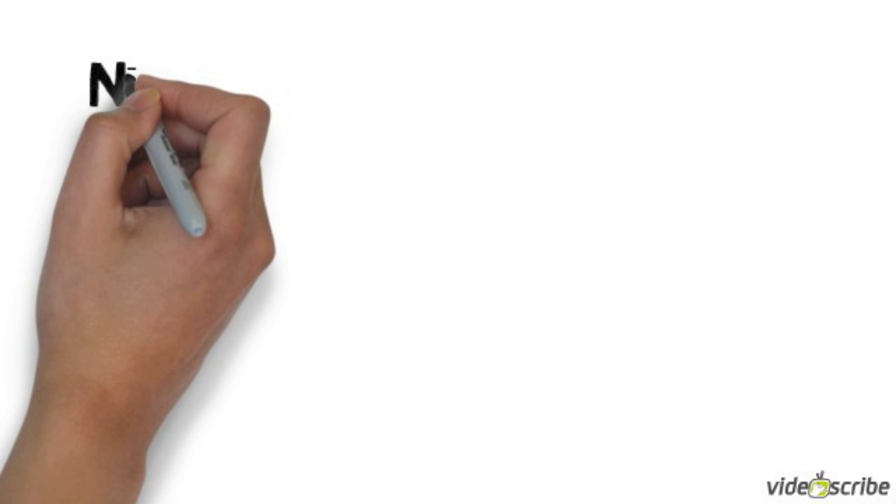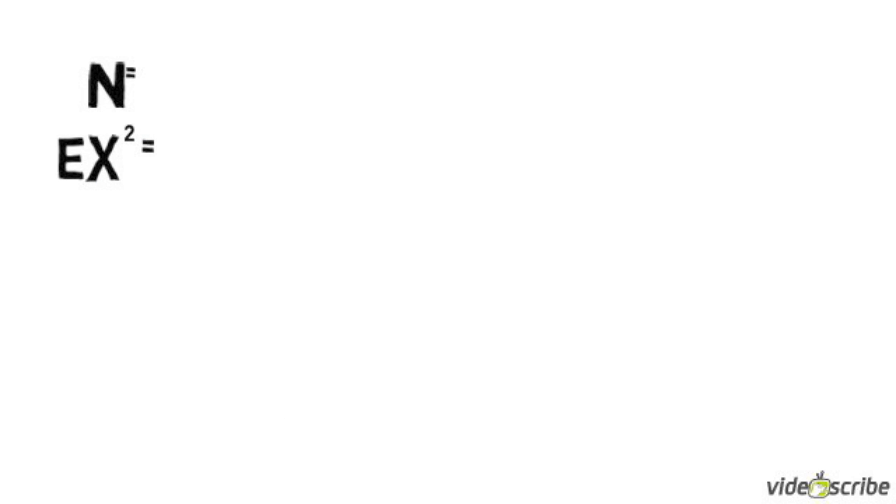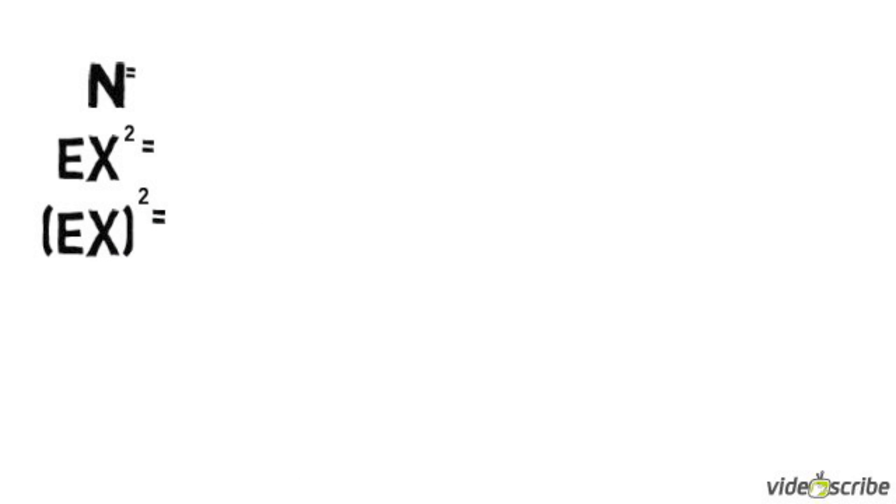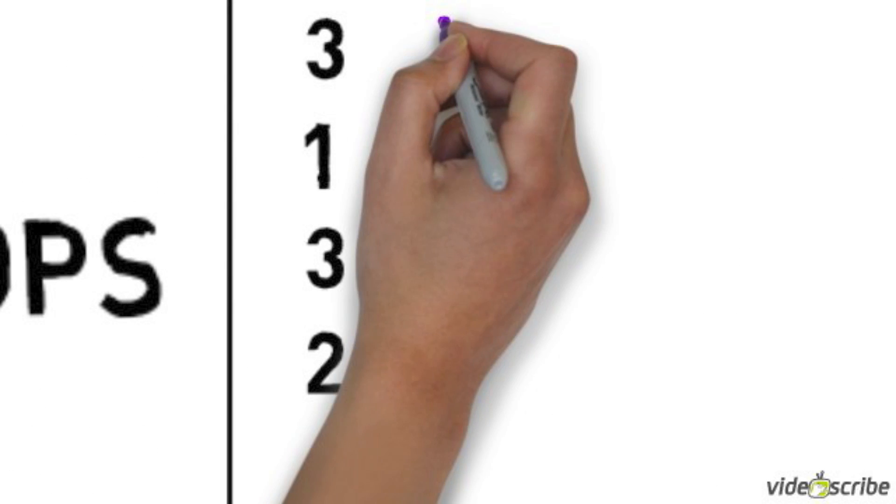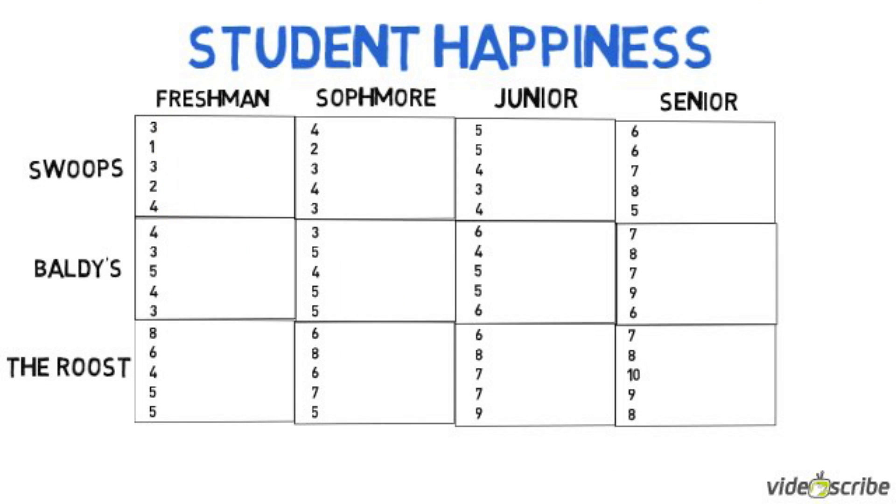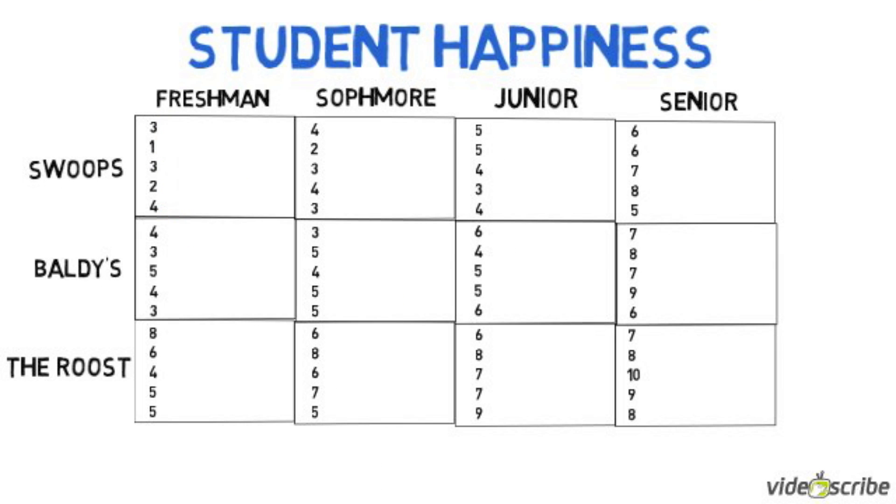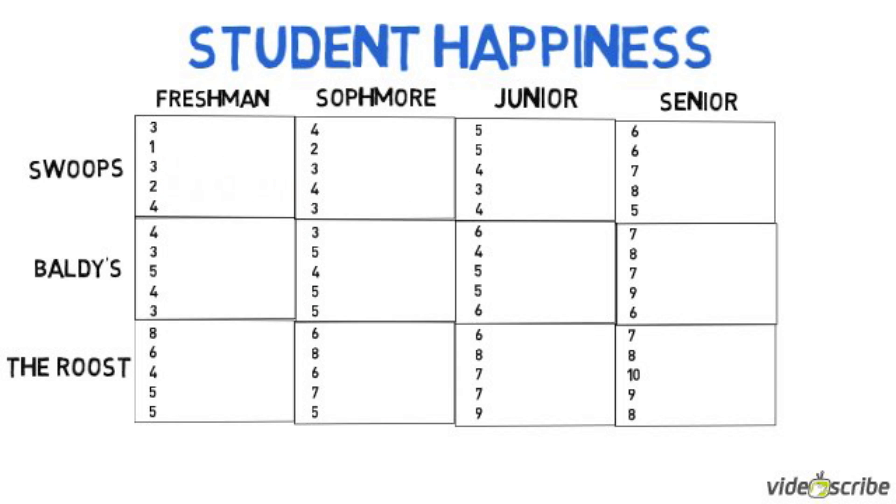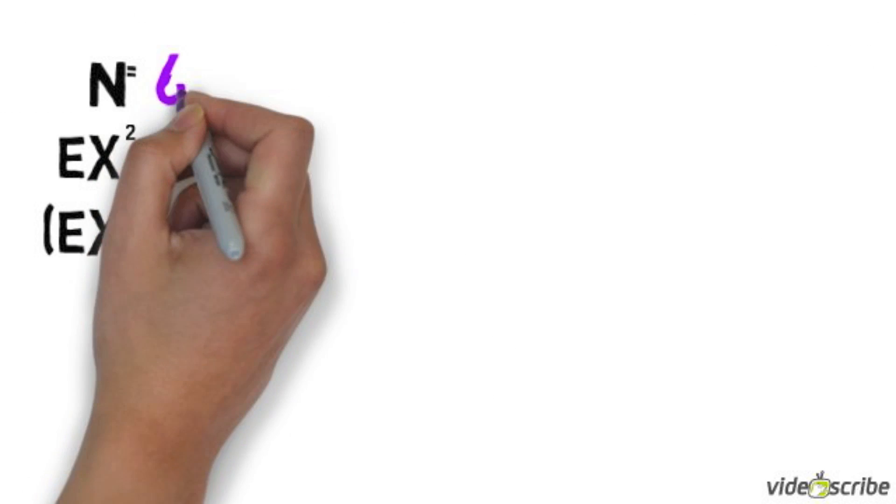The first thing we need to find is the n, or the total number of participants. We then need to find sum of x squared, and finally, squared sum of x. First we're going to count how many participants are in each cell. Now that I know there are 5, and 4 times 3 is 12 cells, so there are 60 participants total. So our n is 60.